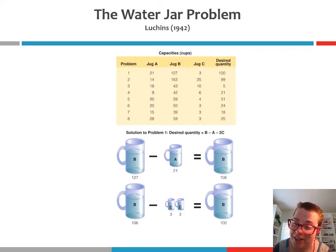As far as solutions to this problem, many of you might have noticed that all of the problems can be solved by the following formula: you start with B, you subtract A, and then you subtract 2C. So B minus A minus 2C—that formula will solve all of the problems that you were given, all eight of the problems.